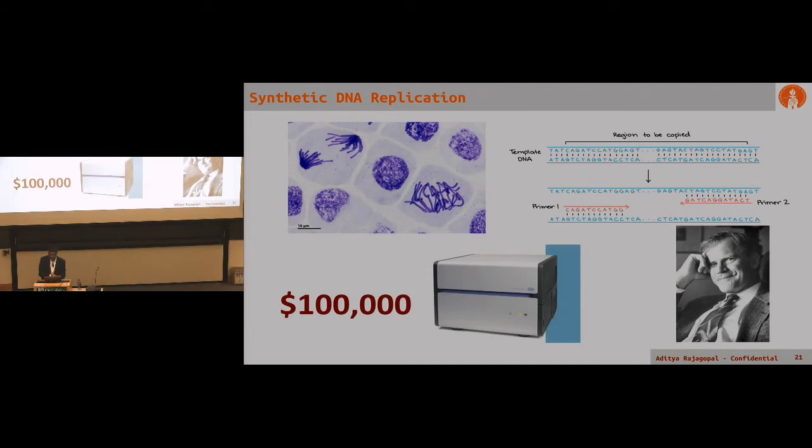As you cycle the temperature from a cold state to a hot state, you can activate and deactivate this enzyme to synthetically replicate DNA. It was a phenomenal invention by Cary Mullis, the Nobel laureate, and it's probably single-handedly the most important discovery in biology this last century.